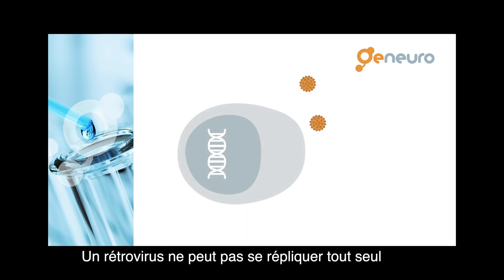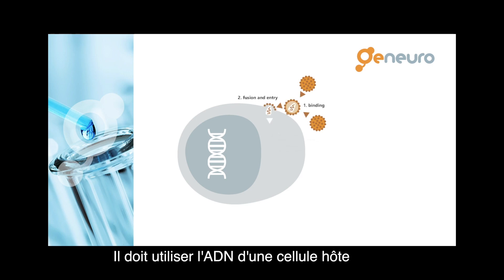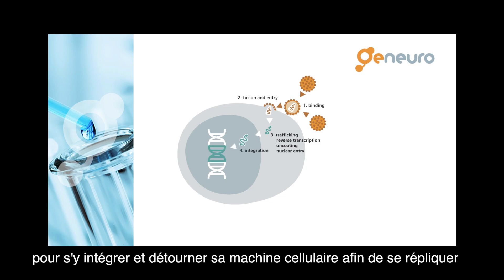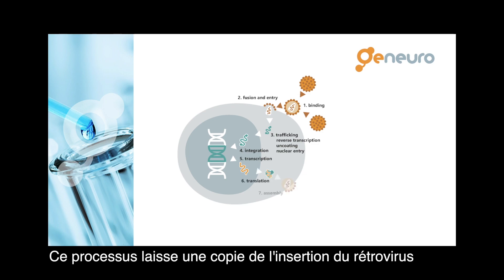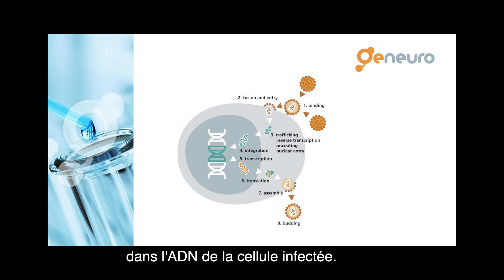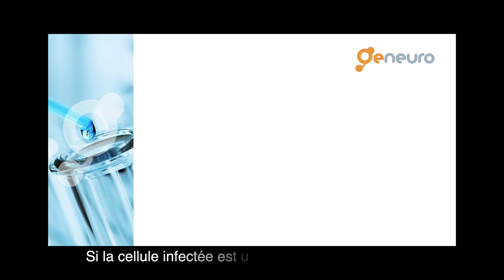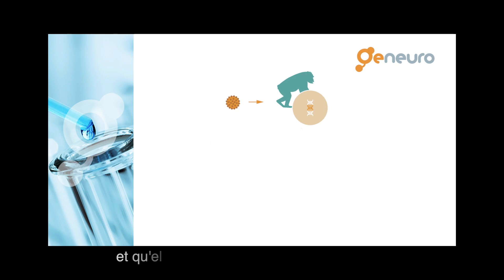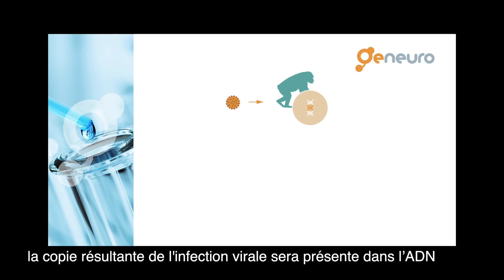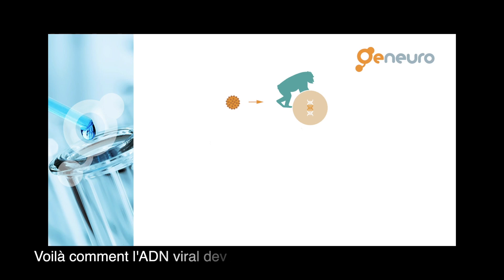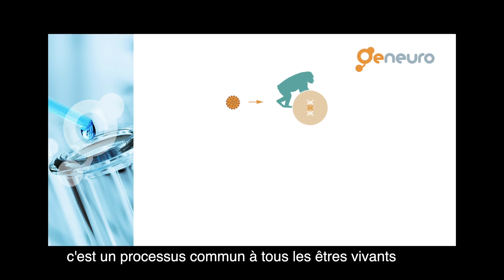A retrovirus does not have the ability to replicate itself. It needs to use a host cell's DNA to integrate itself and use the cell's machinery to replicate. This process leaves a copy of the retrovirus insertion in the DNA of the infected cell. Now if the infected cell is a germline cell and it is later fecundated, the copy from the viral infection will be present in the DNA of every cell of the descendant. This is how viral DNA becomes endogenous to the DNA of the host, and it is a process common to most living beings.